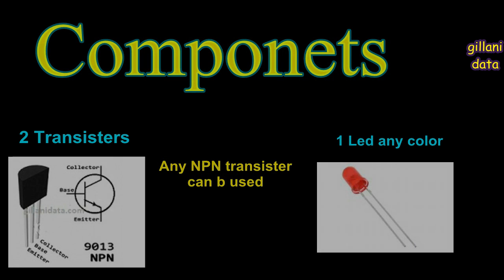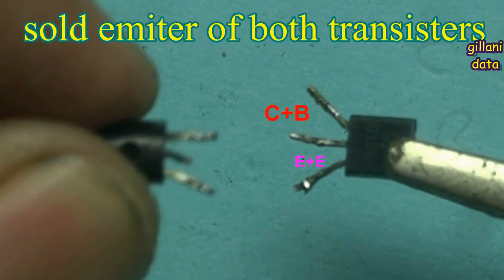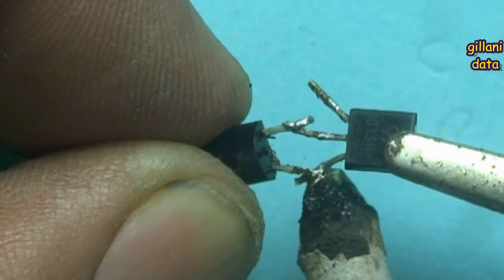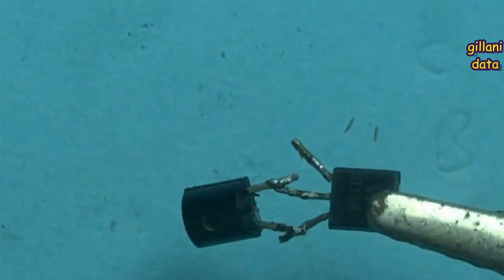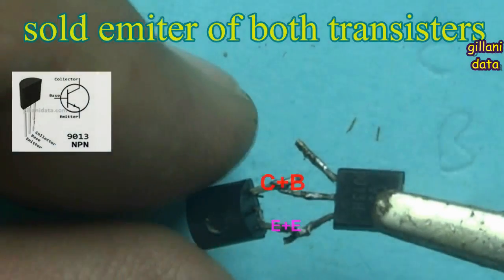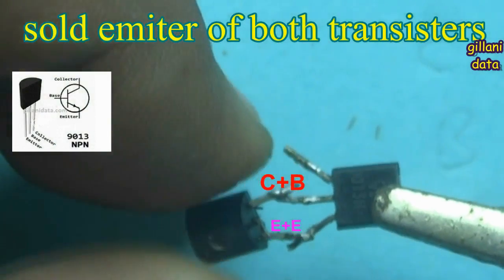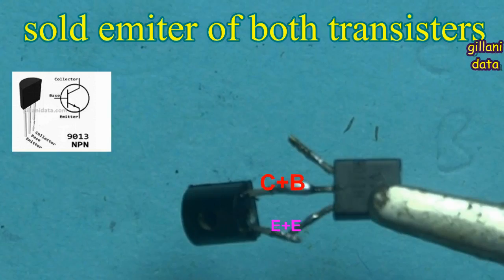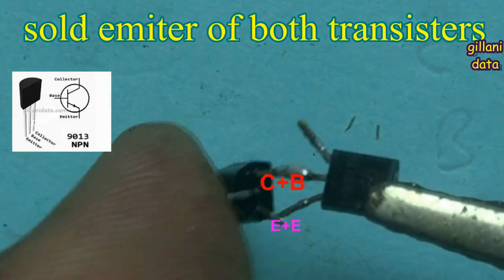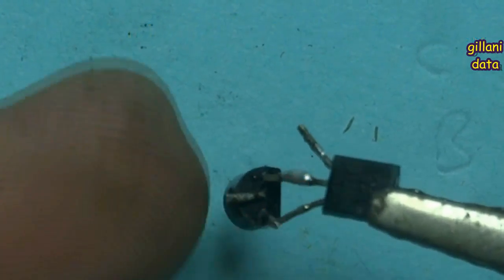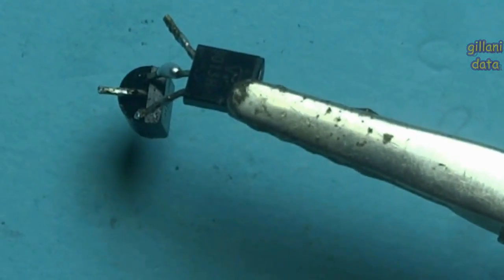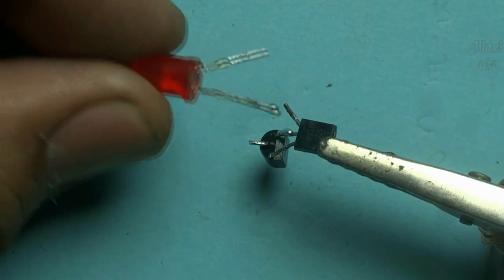Let us solder the components. I am soldering the emitter of both transistors and the collector point with the base point of the first transistor. Both transistors have been soldered.